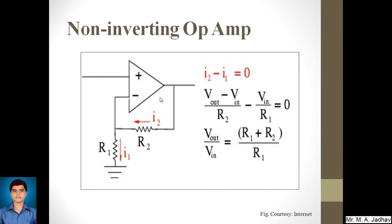The next type is the non-inverting operational amplifier. In this circuit, the input is given through the non-inverting terminal of the op-amp, and the inverting terminal is connected via a potential divider network. The output can be considered to be taken from across a potential divider circuit consisting of R1 in series with R2. The voltage Vx at the junction point equals the fraction R1 divided by R1 plus R2, from the voltage divider rule.